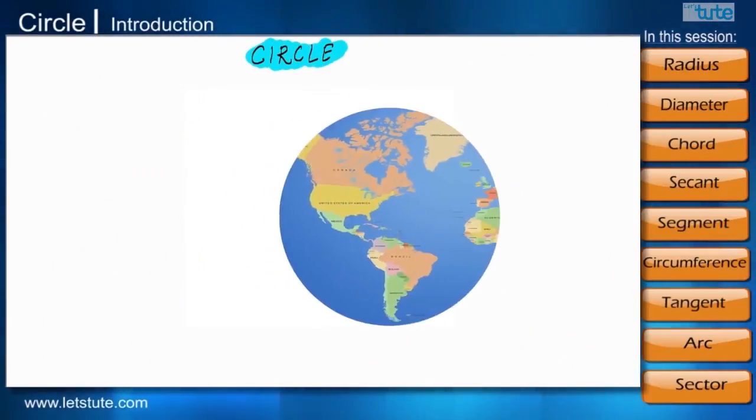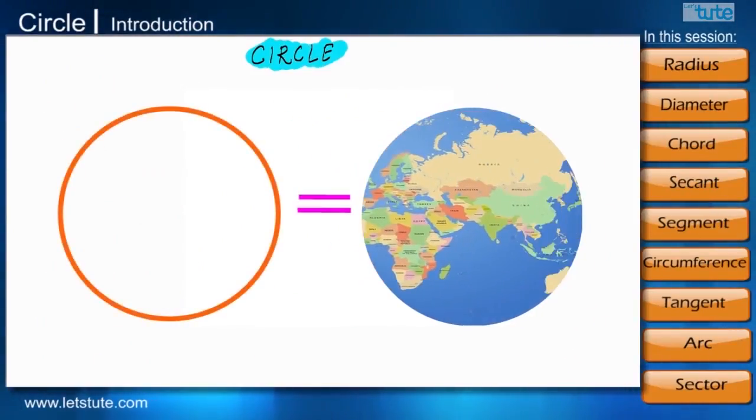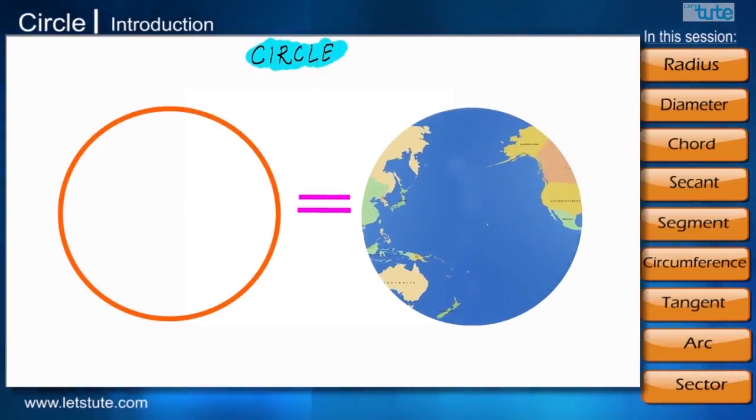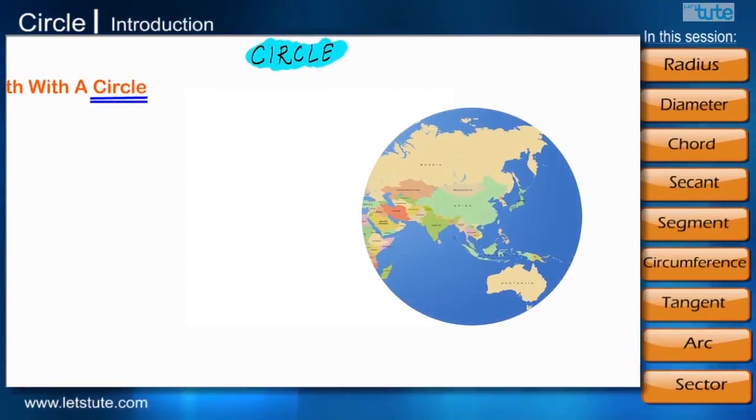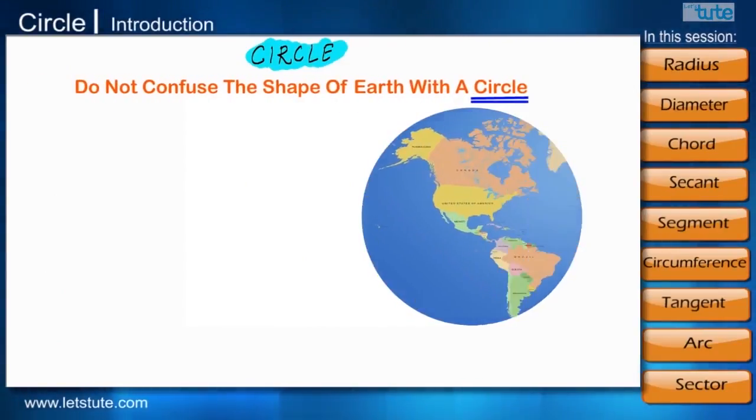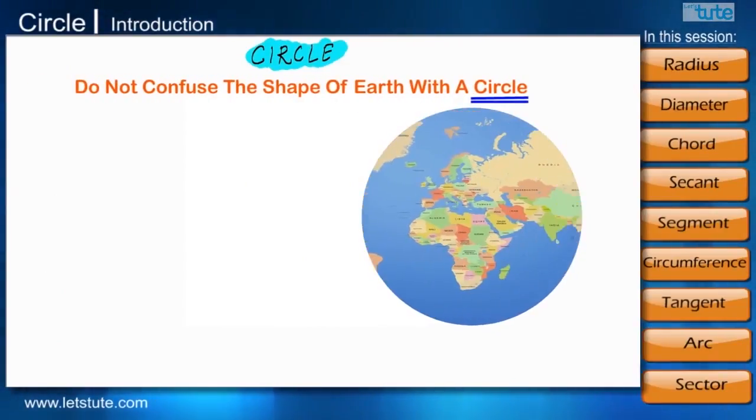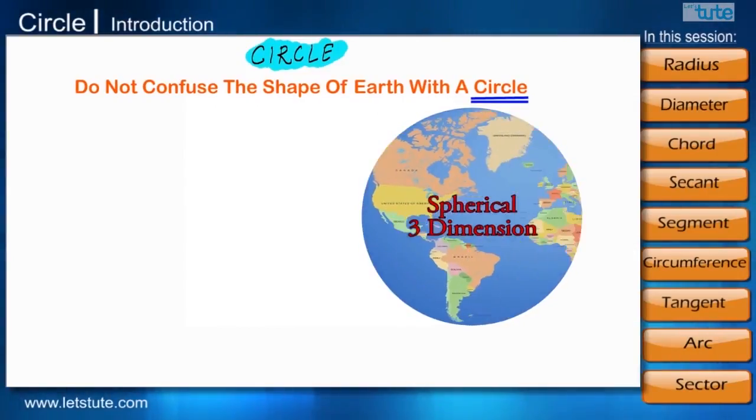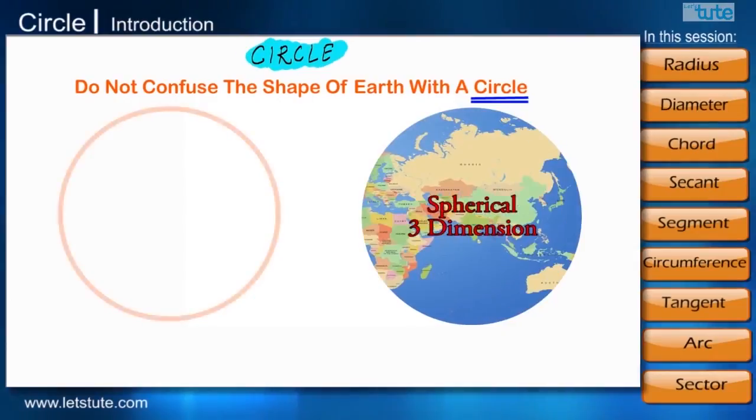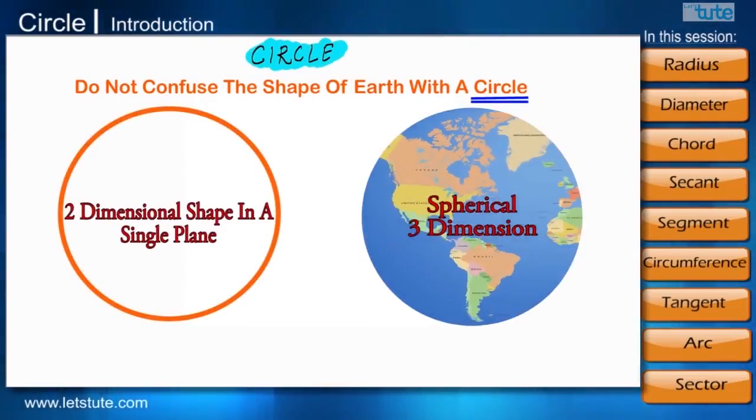Do you think Earth is also a circle? The answer is no. Earth is not a circle. Do not confuse the shape of Earth with a circle. Earth is spherical in shape and three-dimensional in nature, whereas a circle is a two-dimensional shape in a single plane.